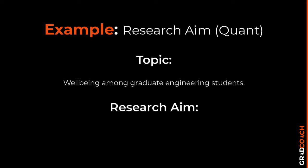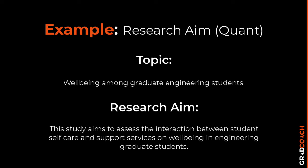For a quantitative example, imagine a study on graduate engineering students and their well-being, looking at whether student support or self-care are factors. You might use an aim like: 'this study set out to assess the interaction between student self-care and support services on well-being in engineering graduate students.' This includes all key variables — well-being, self-care, and student support — and introduces the idea of prediction and interaction. Words like connections between variables, correlations, and relationships signal quantitative research.